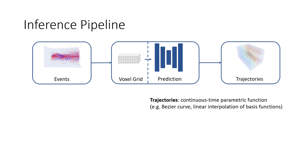These can be for example Bezier curves or interpolated basis functions. The problem is that ground truth is difficult if not impossible to obtain at scale for real world use cases. So how do we train the network?